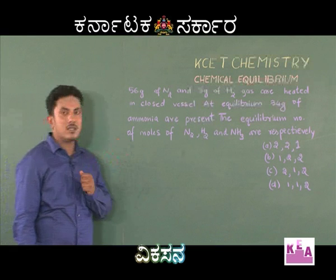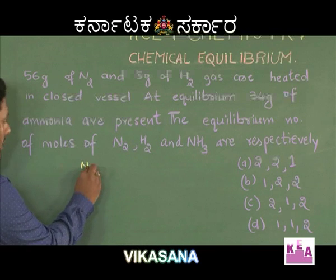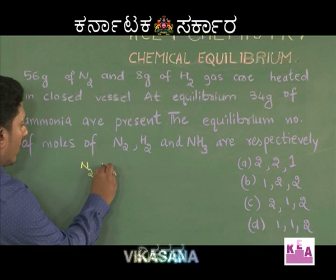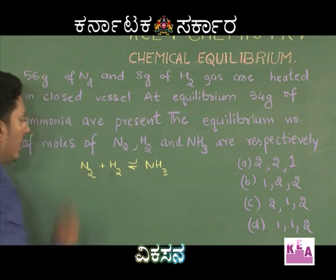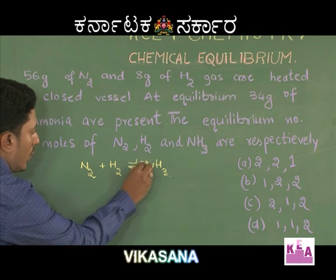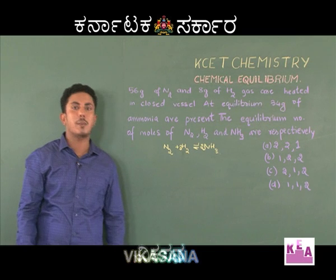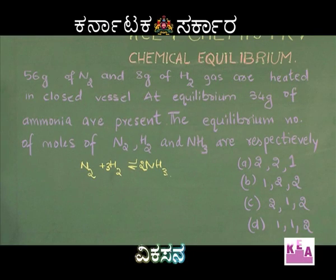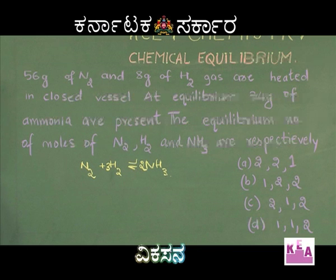I will write the balanced chemical equation for this reaction. When nitrogen is treated with hydrogen to form ammonia, the balanced chemical equation is: 1 mole of nitrogen reacts with 3 moles of hydrogen to give 2 moles of ammonia. The question asks us to calculate the equilibrium moles of nitrogen, hydrogen, and ammonia respectively.